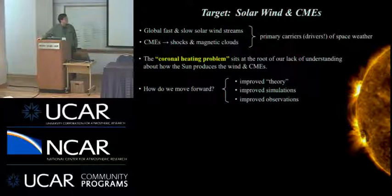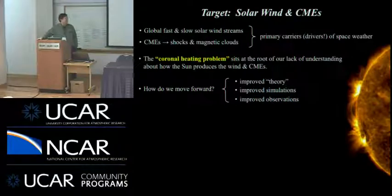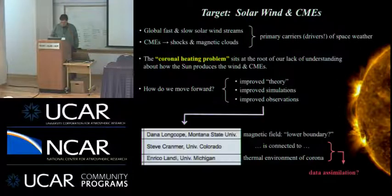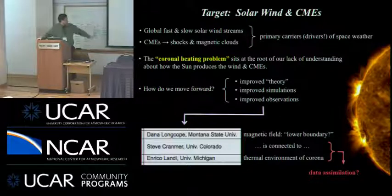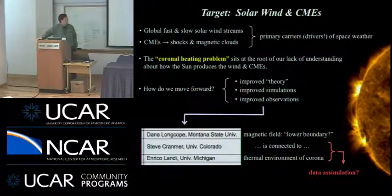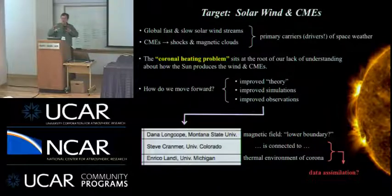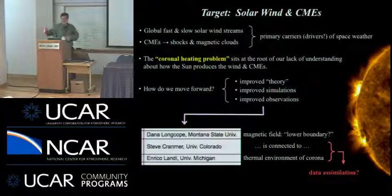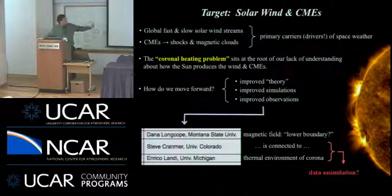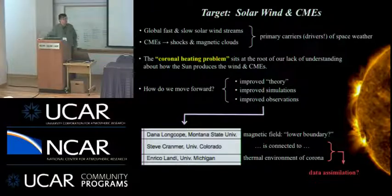Moving forward, we need to go on all fronts — theory, simulations, and observations. I'm trying to bridge the gap between the solar surface magnetic field as a lower boundary and the outer corona. If you can measure the magnetic field property at the lower boundary, it's relatively easy to use in large-scale simulations. But the problem with observations above the solar surface is how do you actually assimilate them into simulations? Data assimilation is a huge big-data kind of problem.